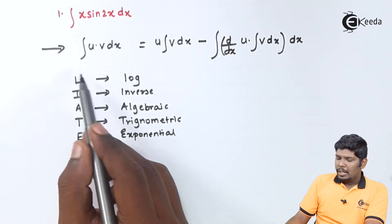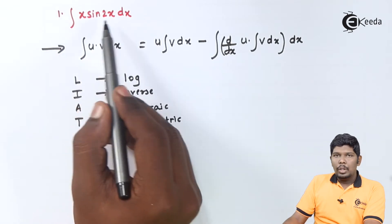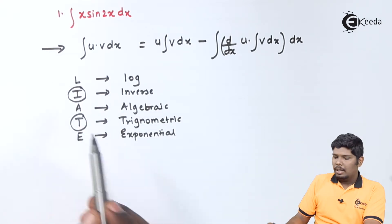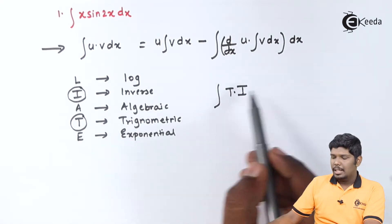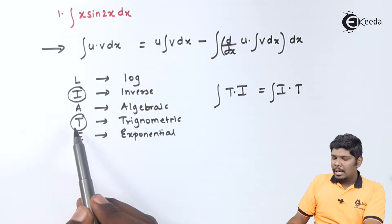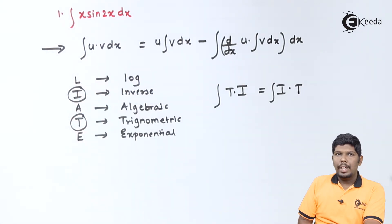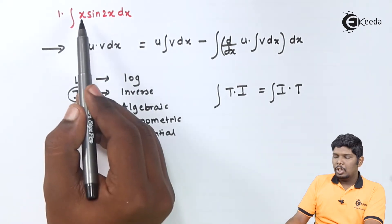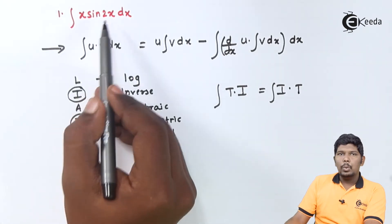The reason to understand the word LIATE is that we will check whether the two functions are in the given order or not. Out of the two functions, if one is inverse and one is trigonometric — for example, trigonometric into inverse — we need to rearrange and write it as inverse first, then trigonometric, since I comes before T. Similarly, in the given problem, we need to integrate x into sin2x.